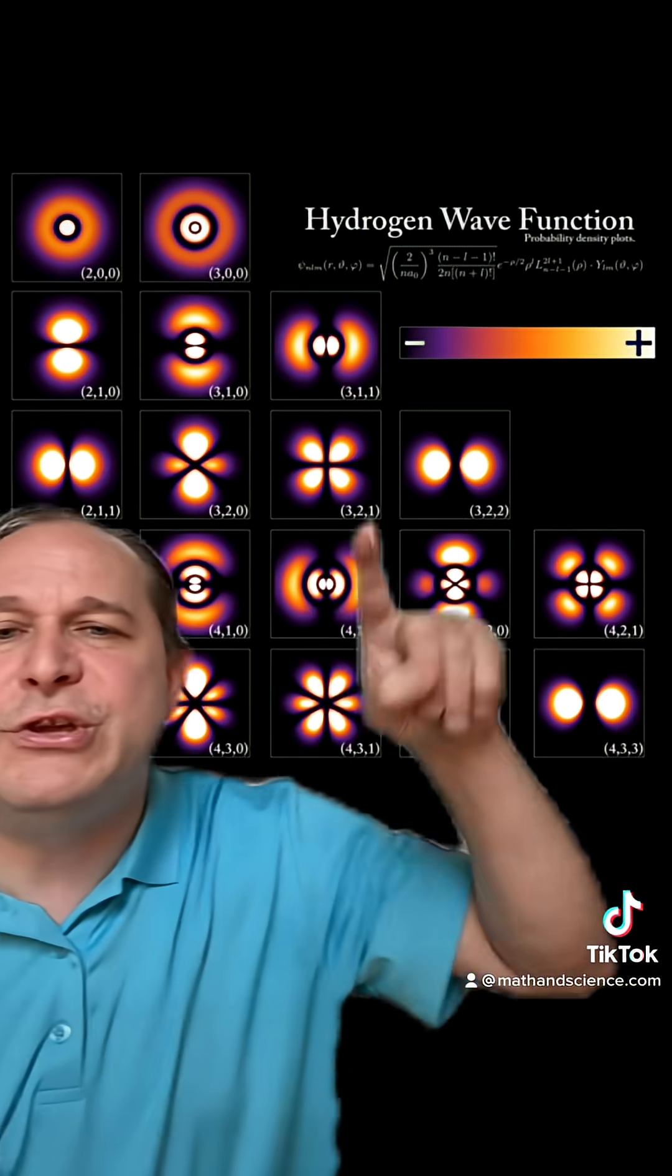Well, in quantum mechanics, you can get multiple solutions, which depend on what we call quantum numbers. And the different solutions have different beautiful shapes, almost like different graphs back in algebra.